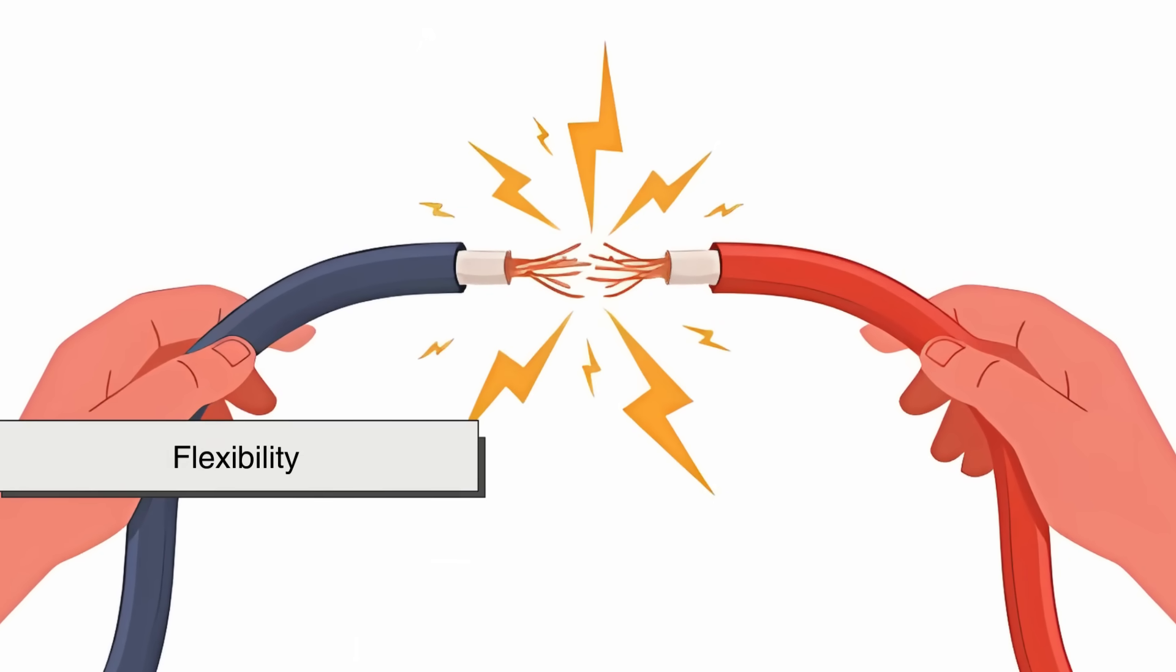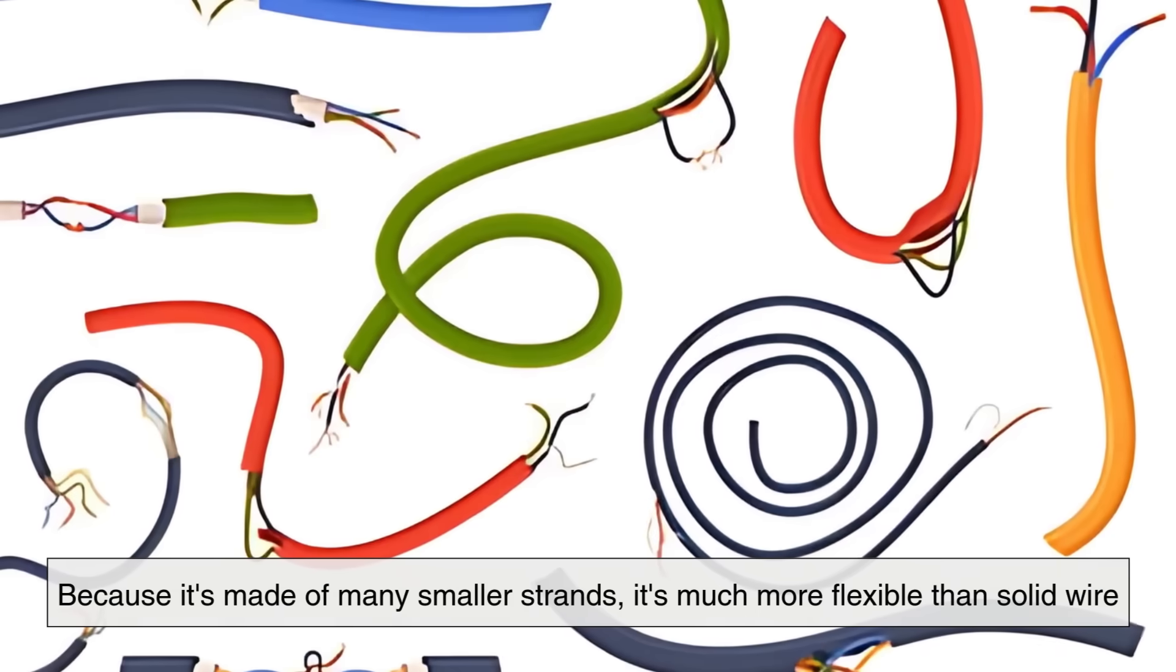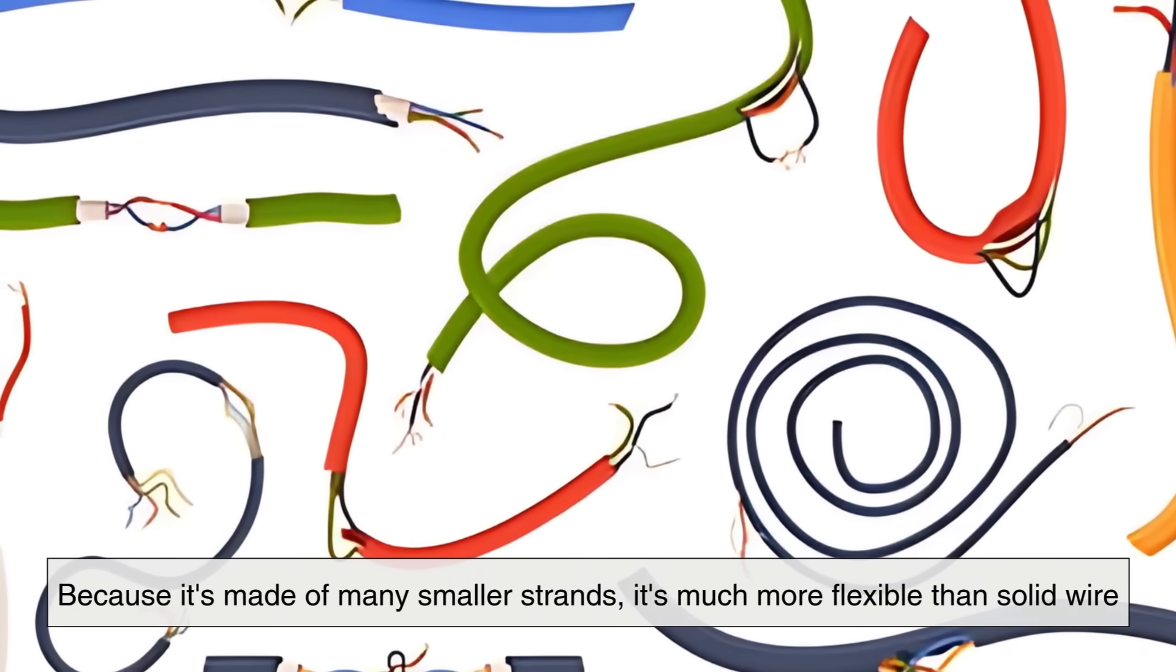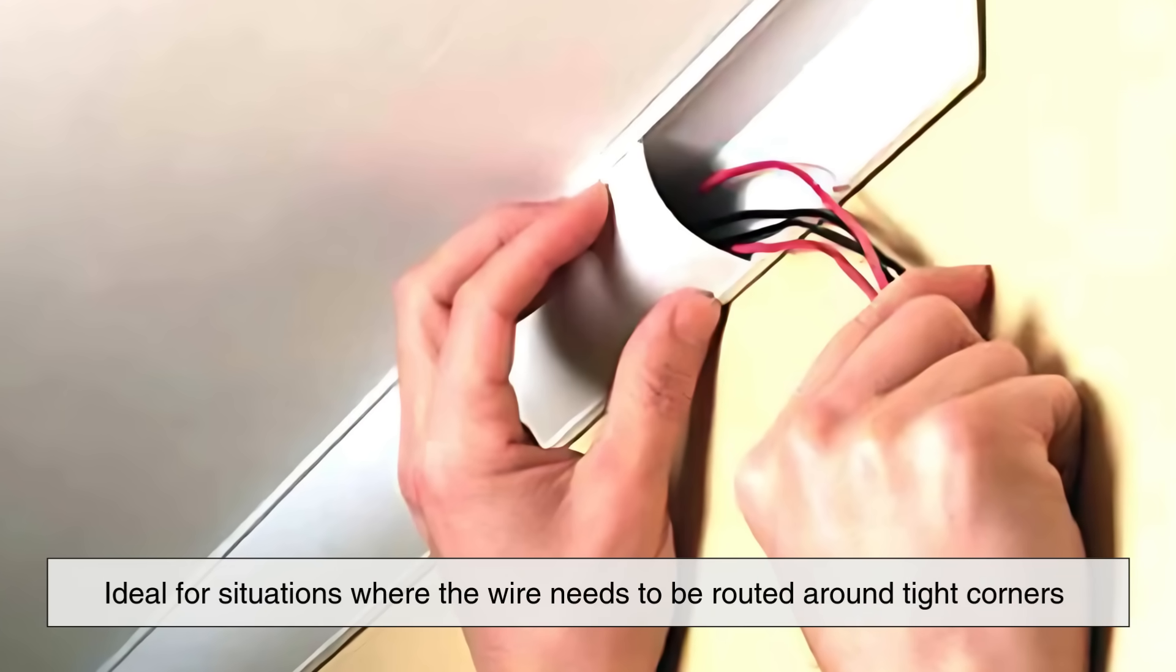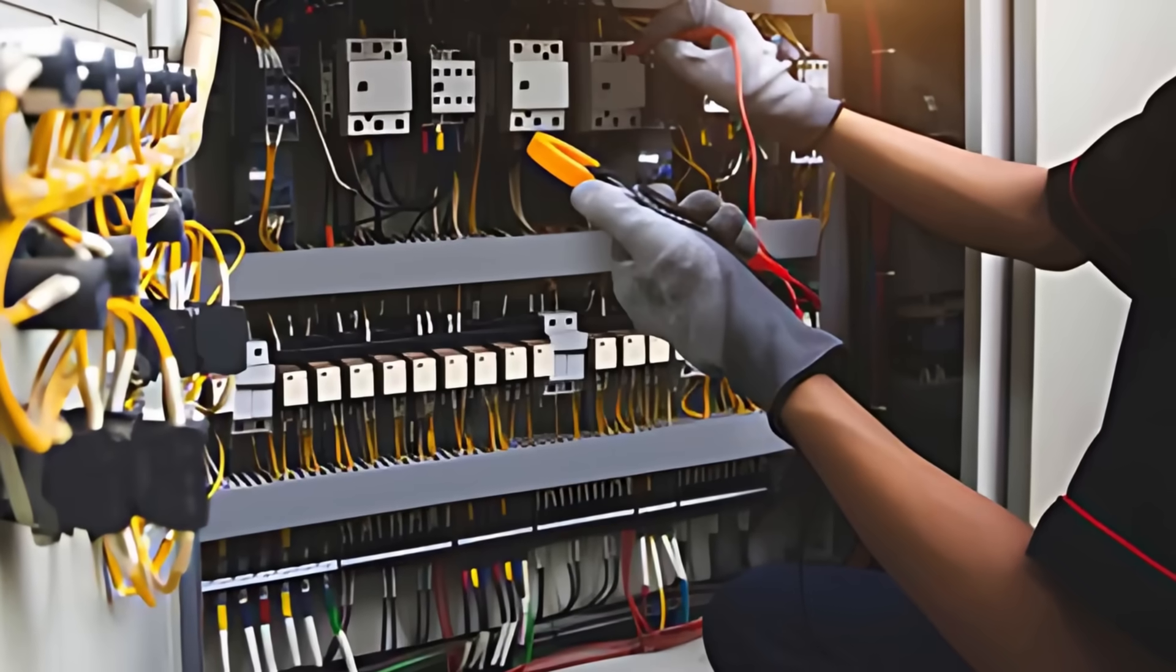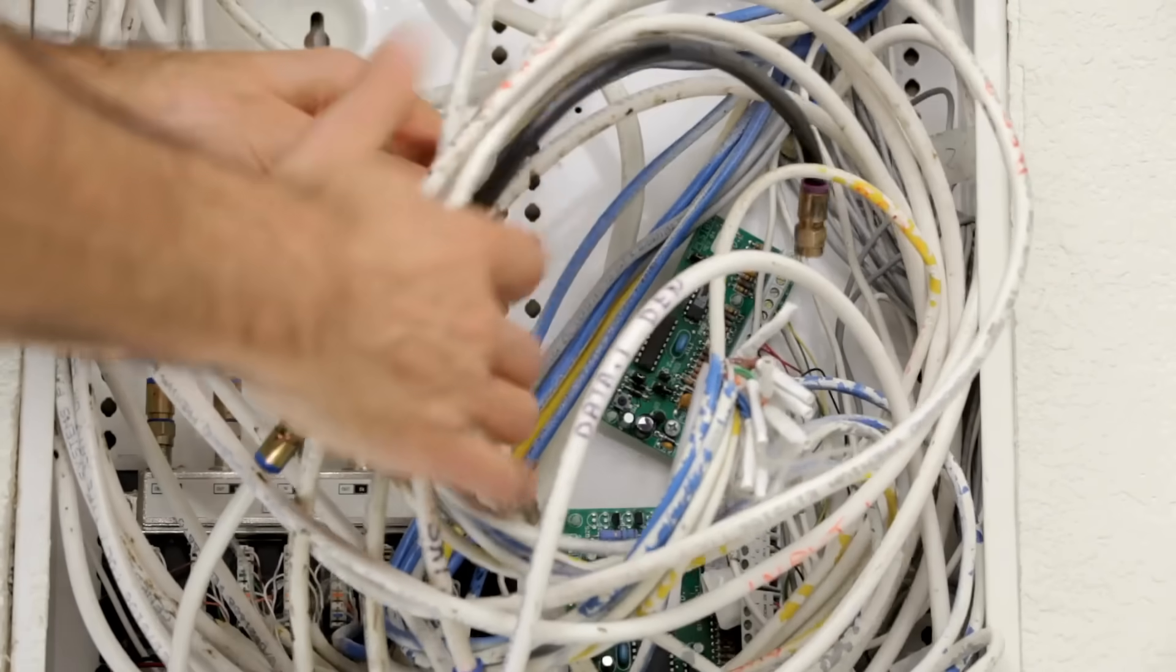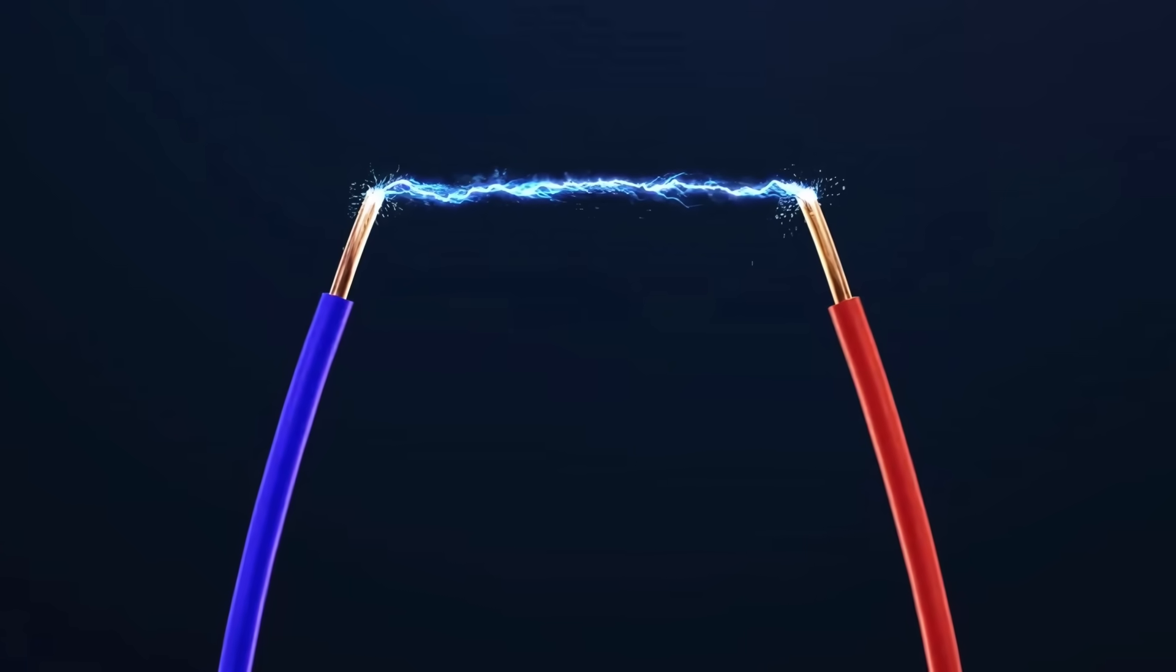Now, one of the first things to consider is flexibility. This is where stranded wire really shines. Because it's made of many smaller strands, it's much more flexible than solid wire. That makes it ideal for situations where the wire needs to be routed around tight corners or where it might be subject to frequent movement, like in robotics, automotive wiring, or portable electronics.